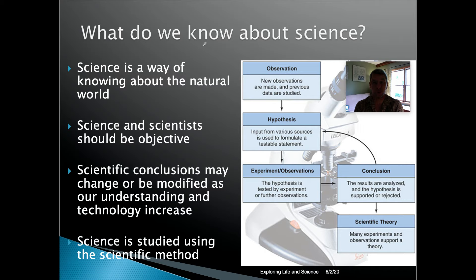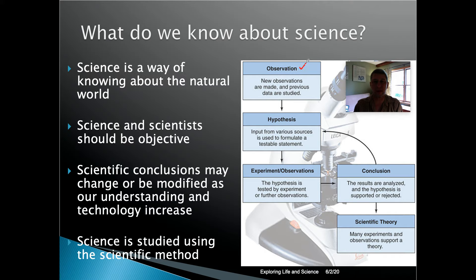Science and scientists are objective by definition. The scientific method is objective — the truth is what matters, not political motivations. Scientific conclusions can also change or be modified as our understanding or technology increases. There's nothing wrong with being wrong in science, especially if new evidence shows the original hypothesis was incorrect. A good scientist will simply ask the next question. Science is studied using a tool called the scientific method, which begins with observation.